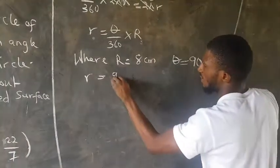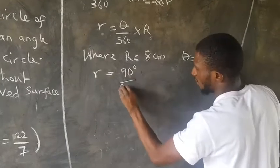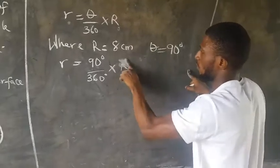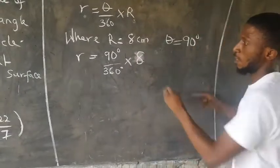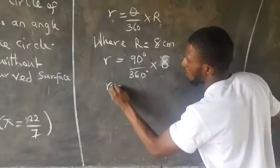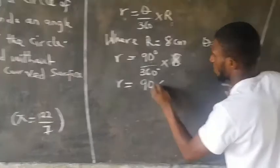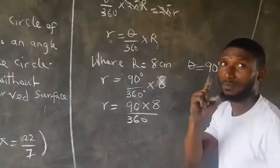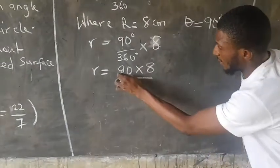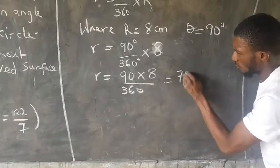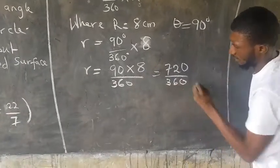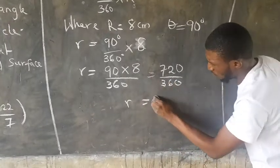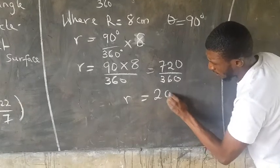We have r = 90/360 × 8 = 720/360 = 2 cm. Therefore the base radius of the cone is 2 cm.